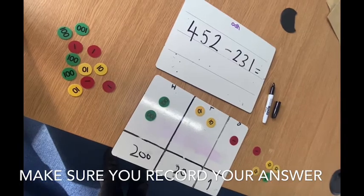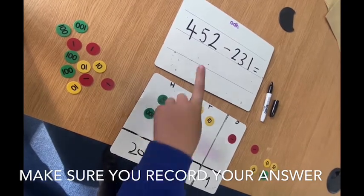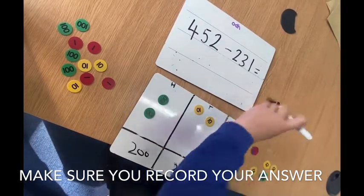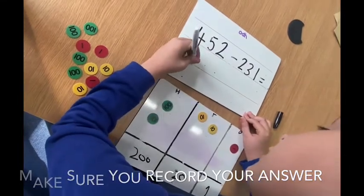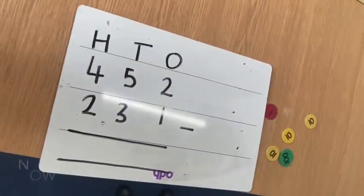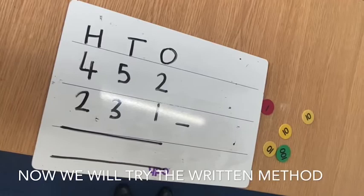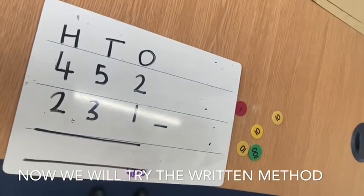452 take away 231 equals 221. Now that's part of the written method. I have made sure my hundreds, tens, and ones are in the correct columns.